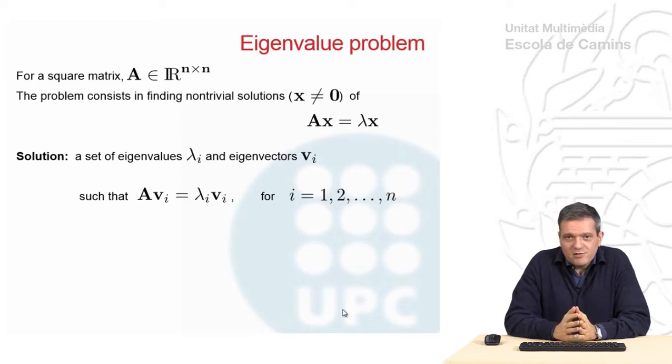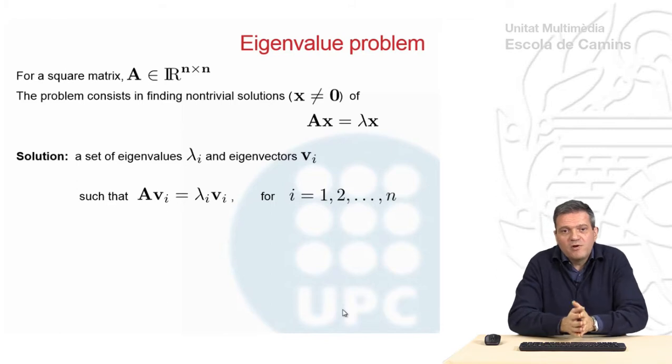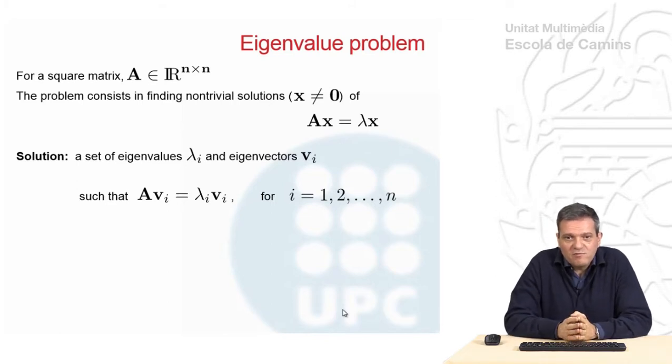Of course, a trivial solution to this problem exists, taking x equal to 0, but this is not an interesting solution and we are looking for non-trivial solutions. This solution comes into a discrete number of values of lambda, which are called eigenvalues, and a discrete number of vectors that we call Vi, which are called the eigenvectors.